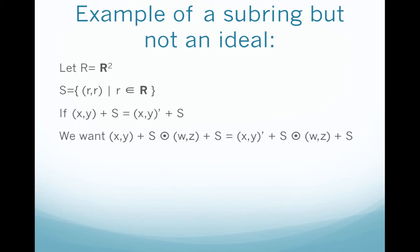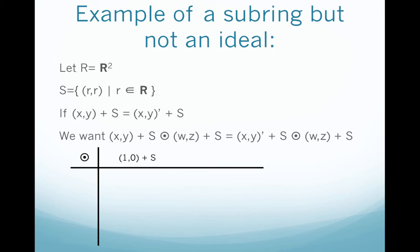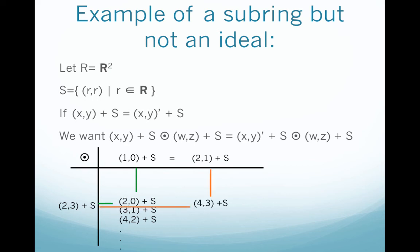In order to check this for our example, we can draw our Cayley table and pick two elements. I'm going to pick (1,0) + S, and we know that equals the coset (2,1) + S, and we'll pick a third element to multiply by: (2,3) + S. Now (1,0) + S times (2,3) + S equals the coset (2,0) + S, which is identical to (3,1) + S, (4,2) + S, and so on. But if we multiply (2,1) + S by (2,3) + S, we get (4,3) + S, which is identical to (5,4) + S, (6,5) + S. And now we have a problem, because these cosets aren't equal, so the quotient ring isn't well defined over multiplication.